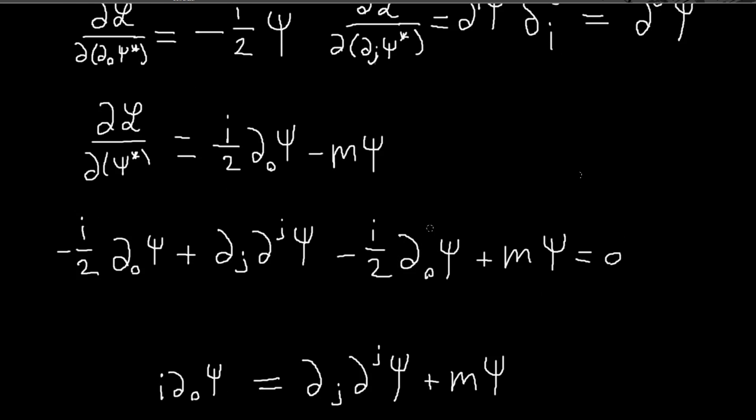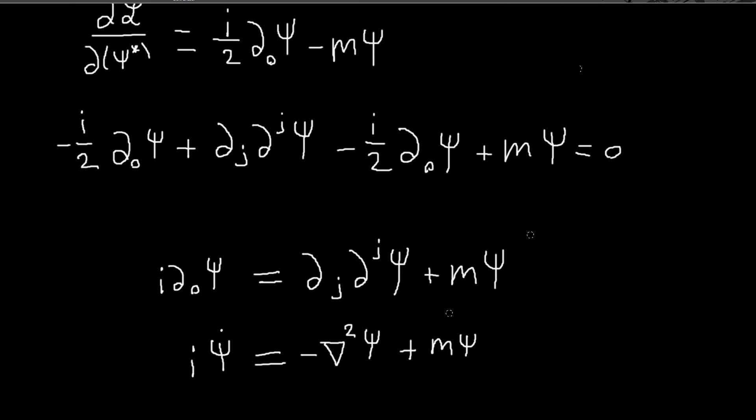If I just move this term to the right, it becomes positive. And these are the same terms, so the two goes away. So I get i d_0 psi equals d_j d_j psi plus m psi. In his notes, the equation of motion he gets is this, which you can see. d_0 is the time derivative, so that's consistent.